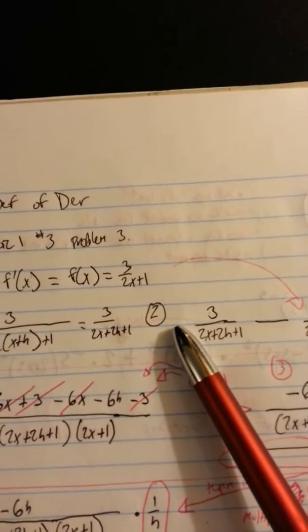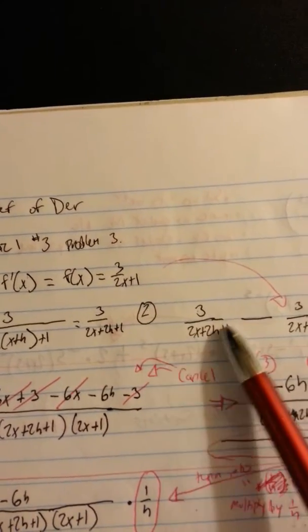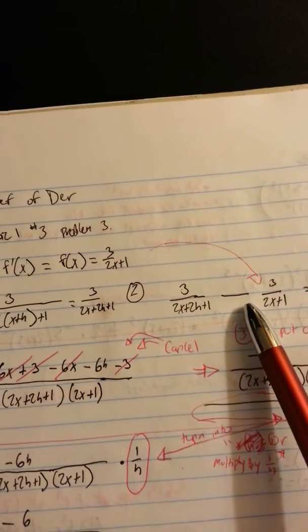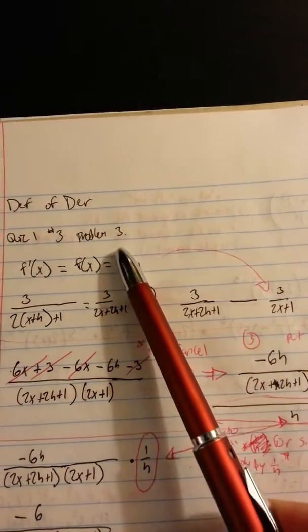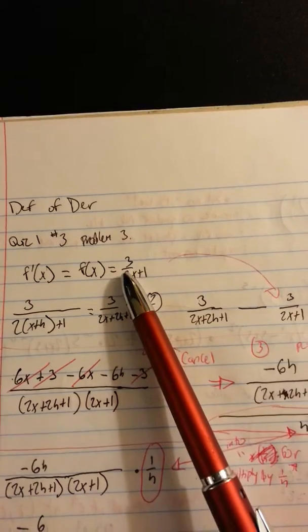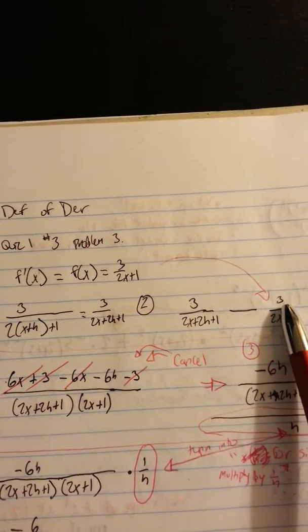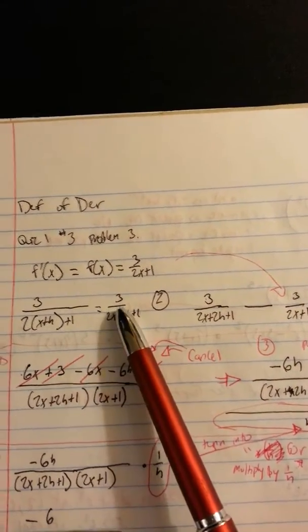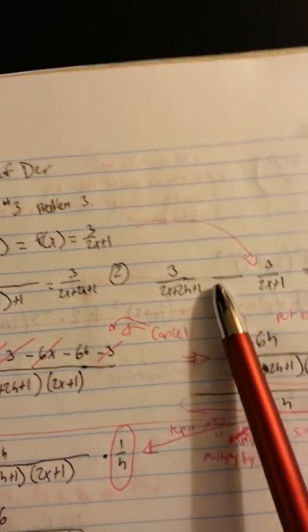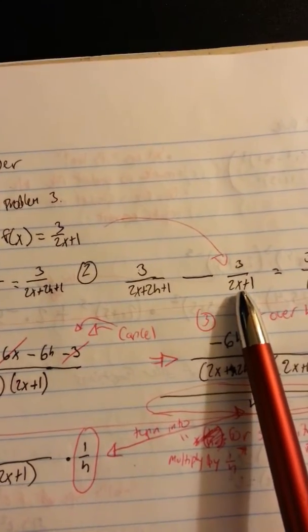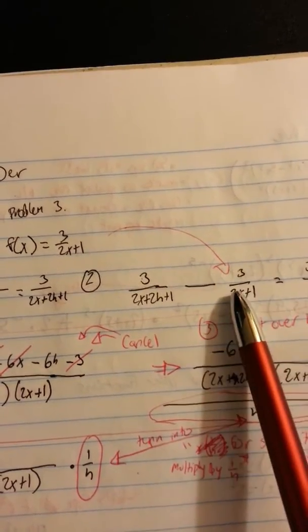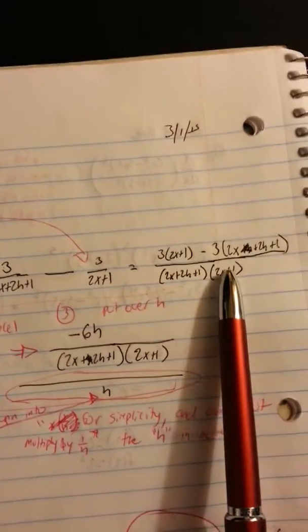Step number 2. Now step number 2 involves taking this x plus h fraction that you just got here and subtracting it by the original problem that we got here. So this is what was given to you. And you take that and subtract it from this x plus h that you just solved over here.